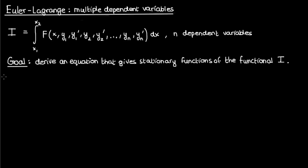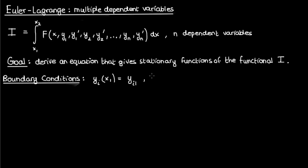Because I've already done this before, I'm not going to discuss everything in excruciating detail this time around. In addition to finding the functions yi that make the functional stationary, our functions yi also need to obey the boundary conditions: yi at x equals x1 equals yi1, and yi at x equals x2 equals yi2. These boundary conditions apply to all dependent variables from y1 to yn, which is why my index i ranges from 1 to n.